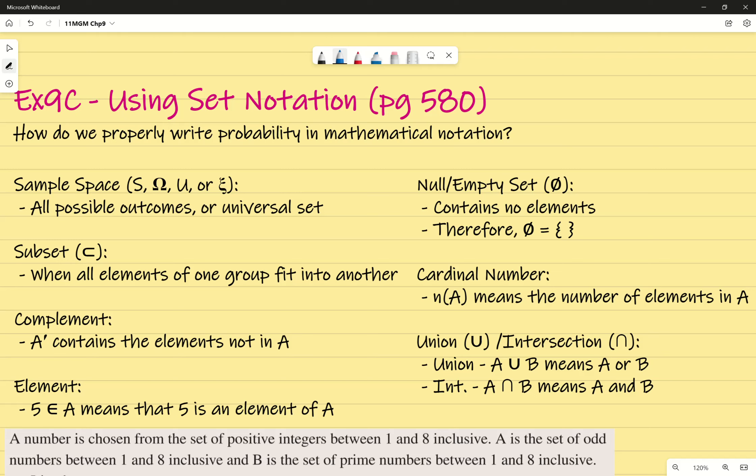This is the introduction to exercise 9c on using set notation, page 580 of your textbook. The question I'm answering today is, how do we properly write probability in mathematical notation? Because unfortunately you can't just write the probability of blah blah blah happening is this. You have to write in mathematical notation to make it consistent amongst your peers and also make it more efficient, save time.